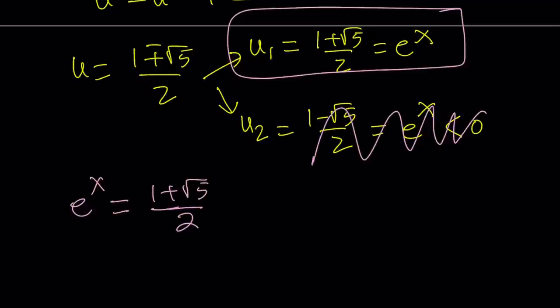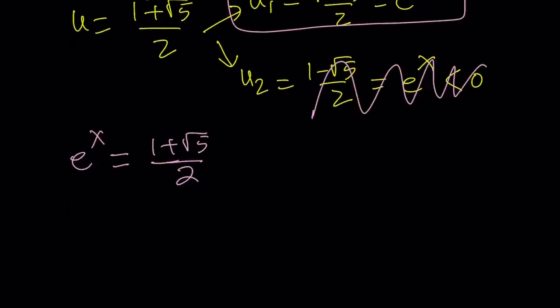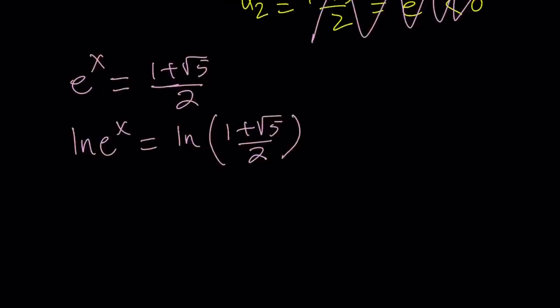To find the x value, we're going to ln both sides. This is kind of like the inverse operation for e to the power something, which we used before. ln(e^x) = ln((1 + √5)/2). And as you know, or you should know, ln(e^x) is the same as x. So from here, we get x = ln((1 + √5)/2).